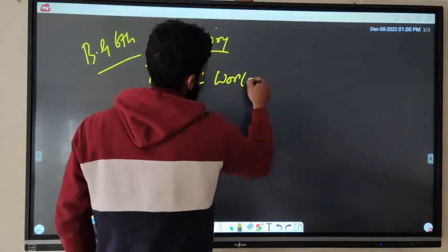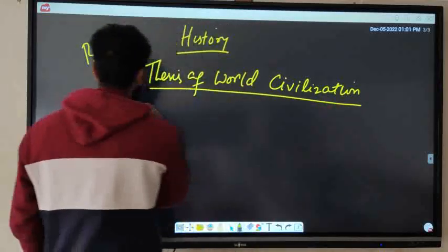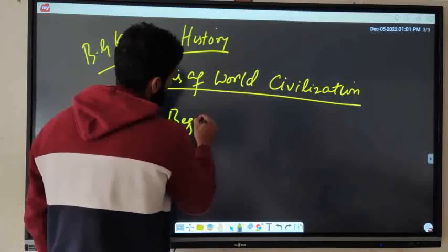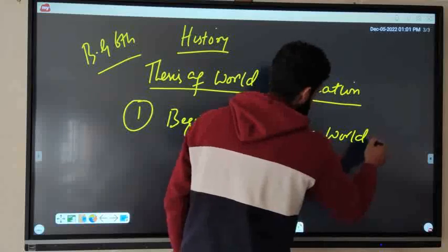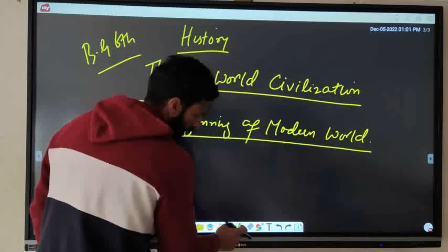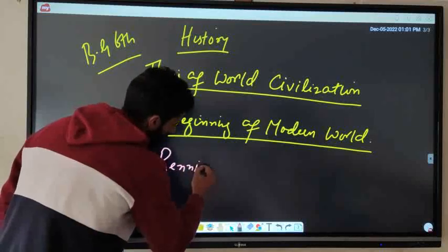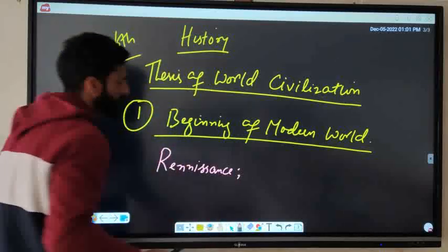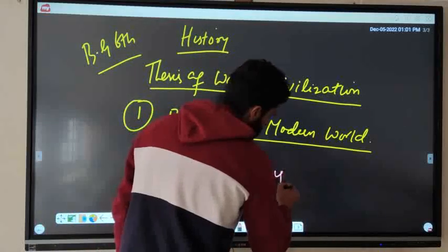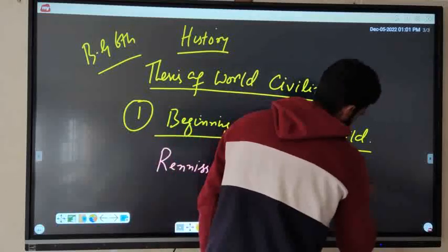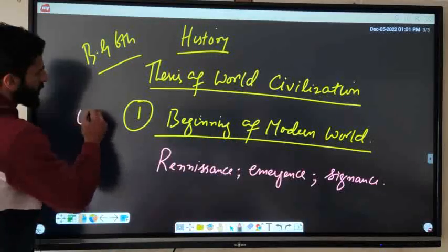Thesis of World Civilization includes four units. For each unit I will give separate questions. Unit one is Beginning of Modern World. The important questions in this unit are Renaissance, its emergence and significance. These are three important topics in unit one.